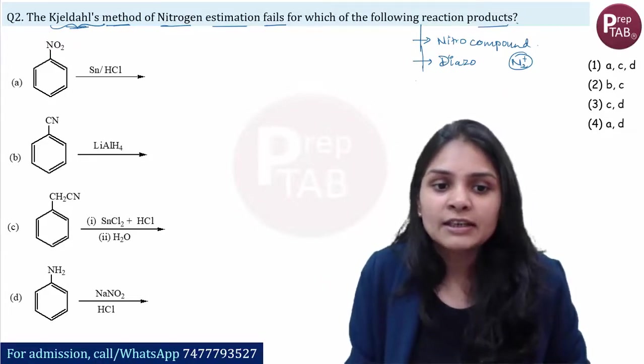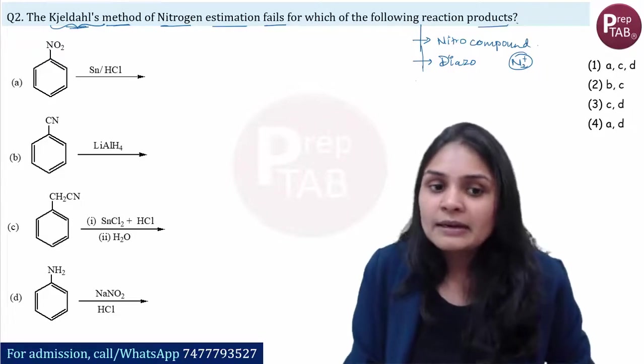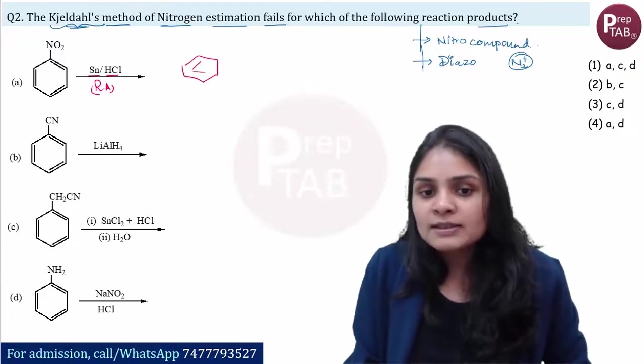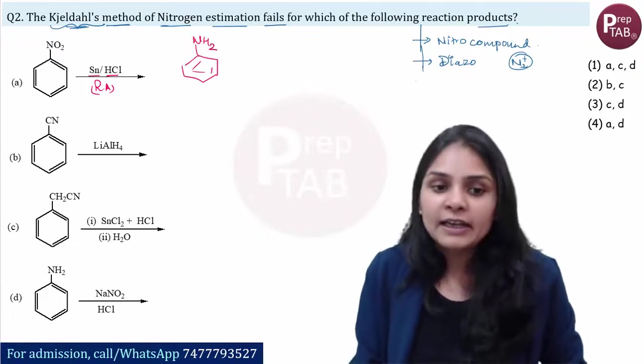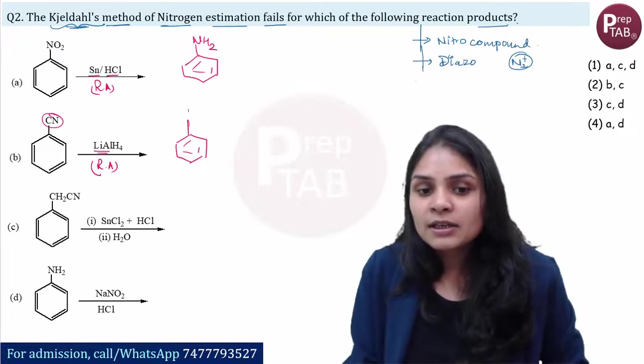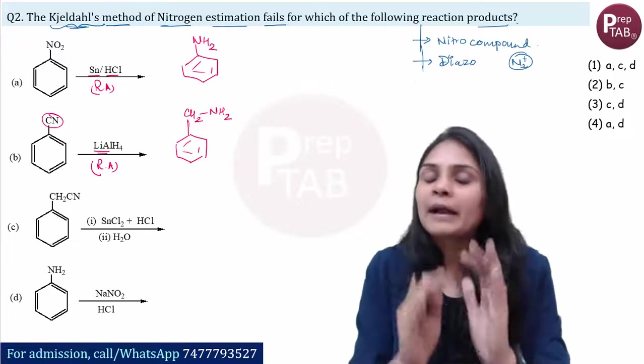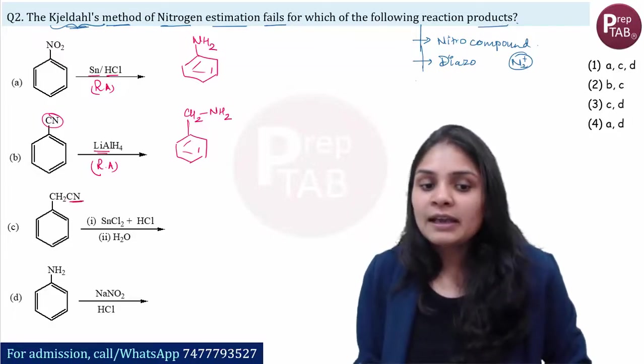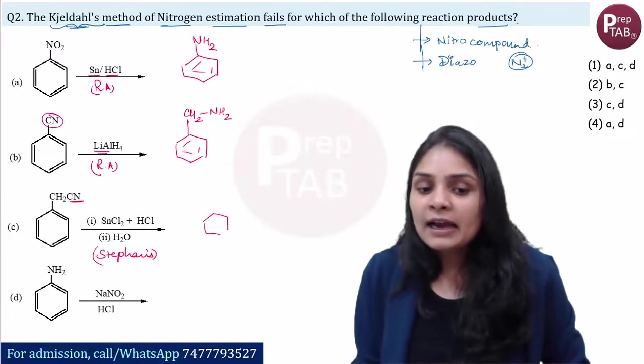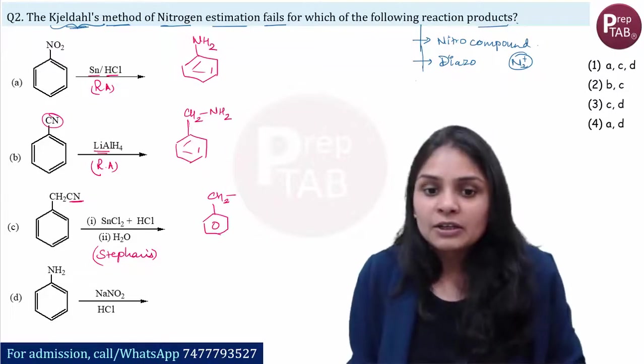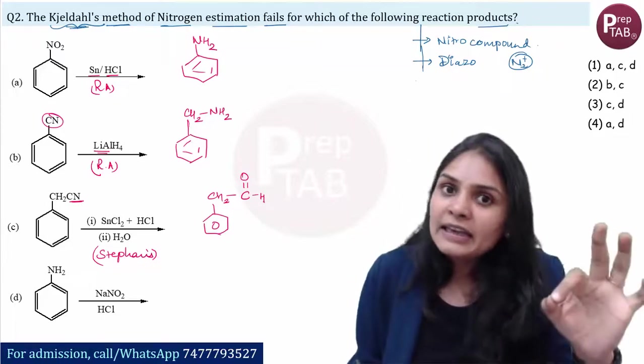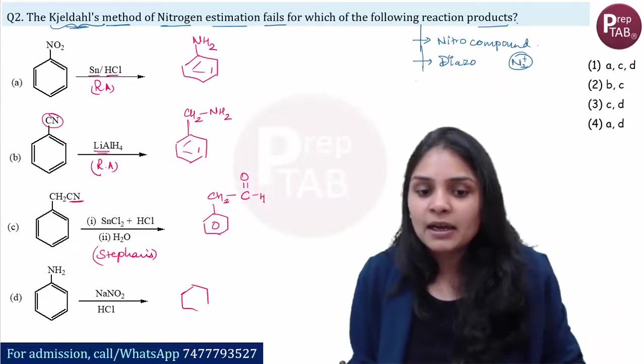Let's quickly write down the products that are formed in these reactions. In the first reaction, nitrobenzene with Sn HCl will act as reducing agent so it will make aniline. Second, nitrile group, lithium aluminum hydride is a very strong reducing agent, reduces to CH2NH2, you will get a primary amine.